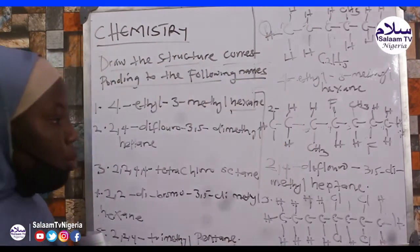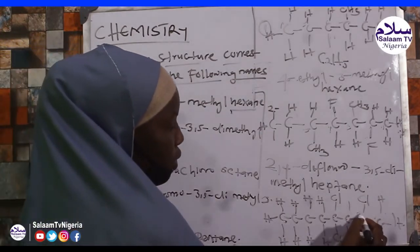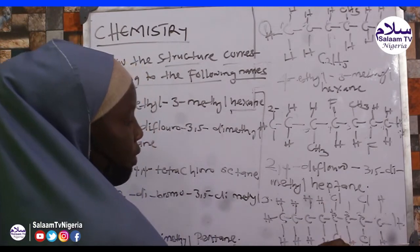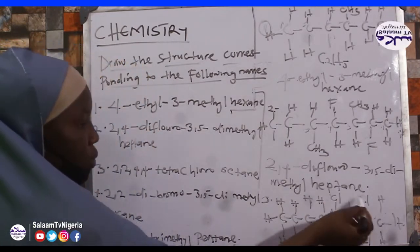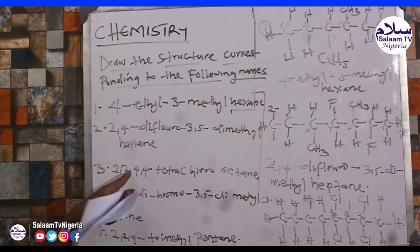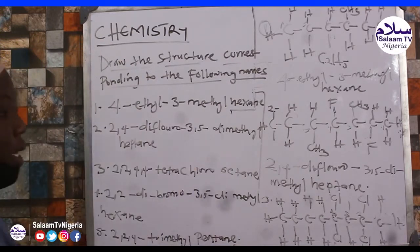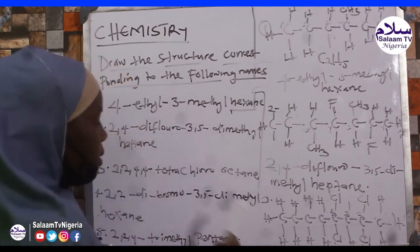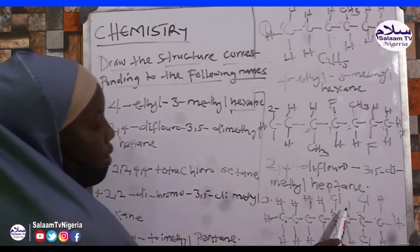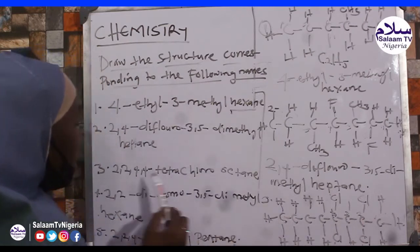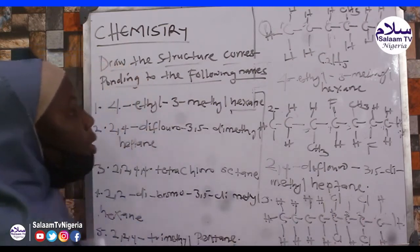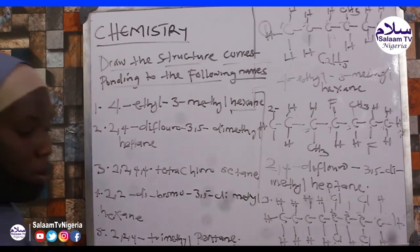So 2,2,4,4-tetrachlorooctane: the parent name is octane, 8 carbons. At position 2 we have 2 chlorine atoms — positions 1, 2 — and at position 4 we have 2 chlorine atoms — positions 1, 2, 3, 4 — giving tetra meaning 4 chlorines on the octane chain.